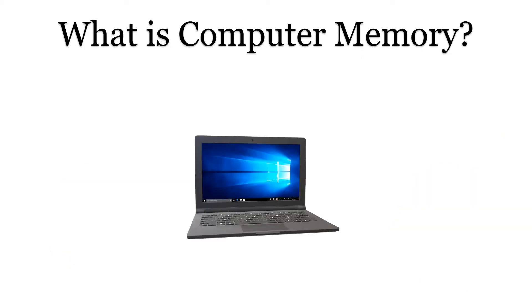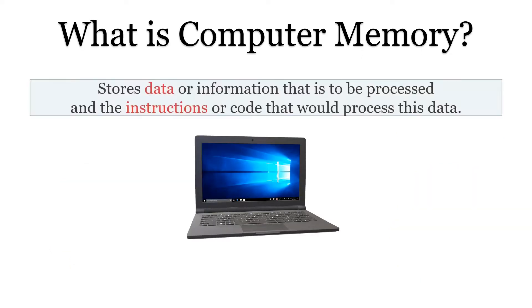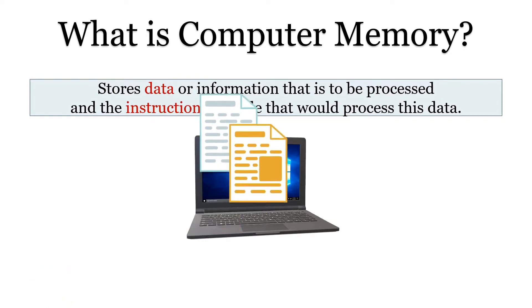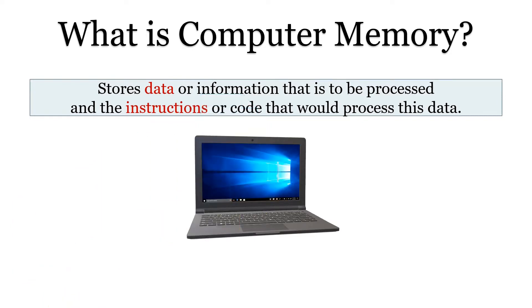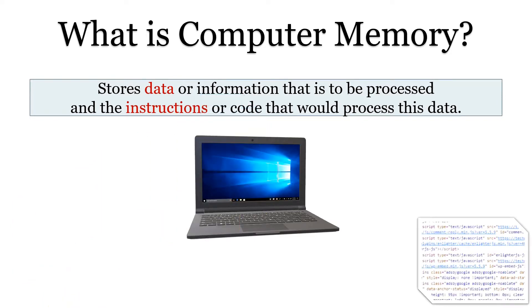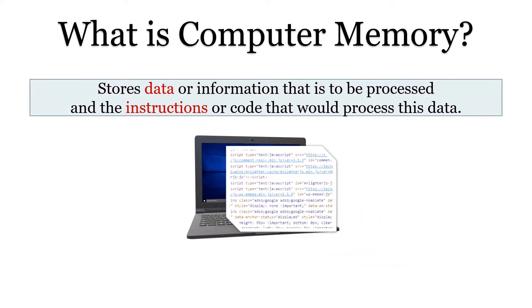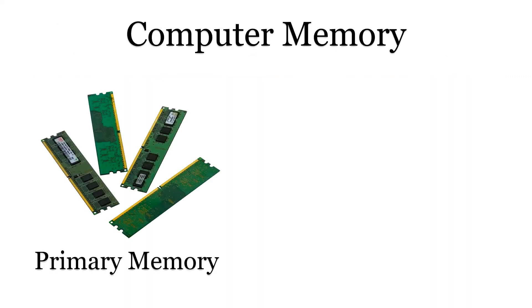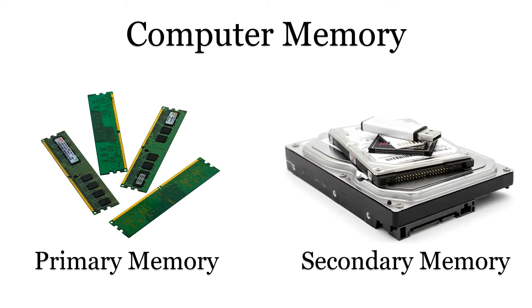Now what is computer memory? The computer memory is the storage of data or information that has to be processed, and the instruction or code that are required to process this data. The computer memory is broadly classified into two types: primary memory and secondary memory. Let us discuss each of them in detail.